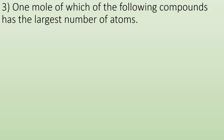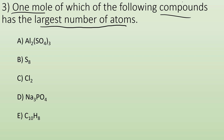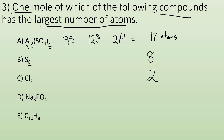Problem 3: one mole of which of the following compounds has the largest number of atoms? You want to look at which compound is made up of the most atoms. Al2(SO4)3 has two aluminums, three sulfurs, and 12 oxygens — a total of 17 atoms. S8 is just eight atoms. Cl2 is just two atoms. Na3PO4 has three sodium, one phosphorus, four oxygen — eight atoms total. C10H8 has 18 atoms total. So the one with the largest number of atoms is choice E, C10H8.